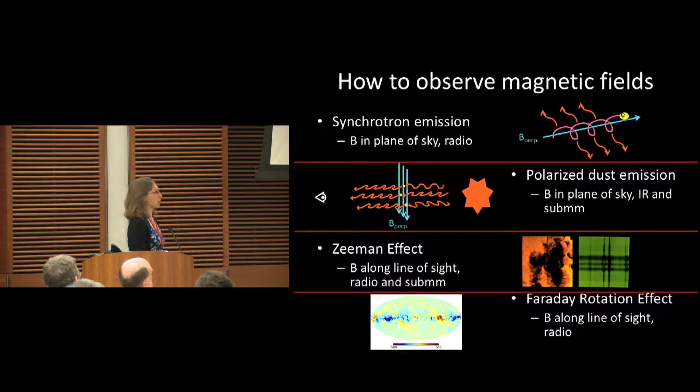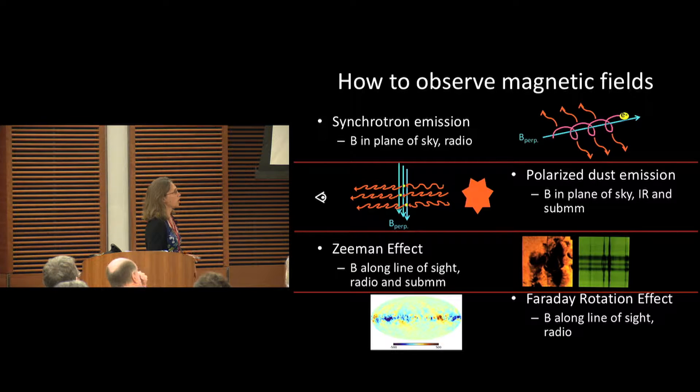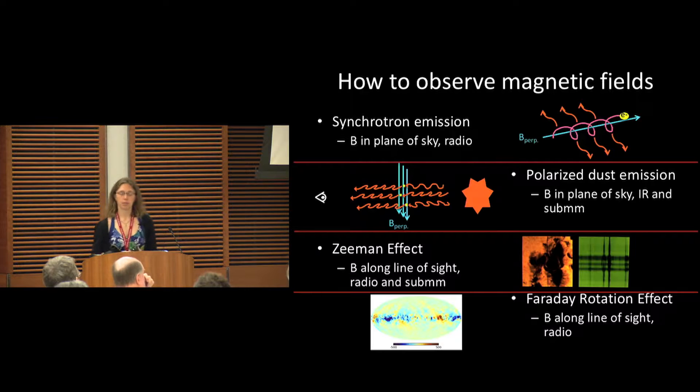Another important way to get the line-of-sight magnetic field is with Faraday rotation, because magnetic fields are three-dimensional in space.